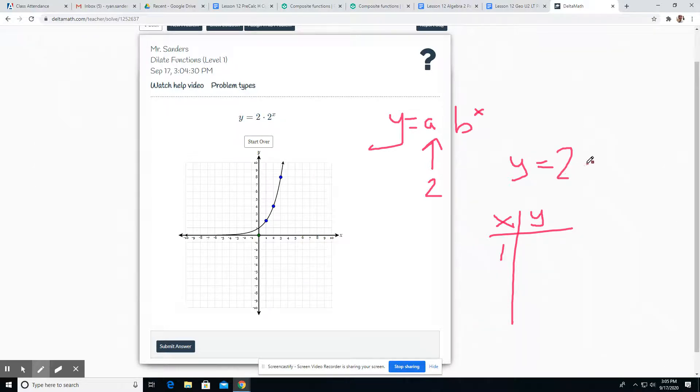that would be 2 times 2 to the first, which equals 2 times 2 is 4. That's our output now. And then if I had a